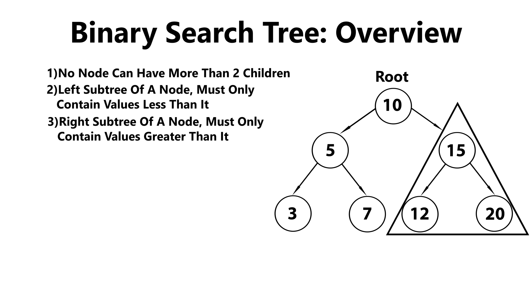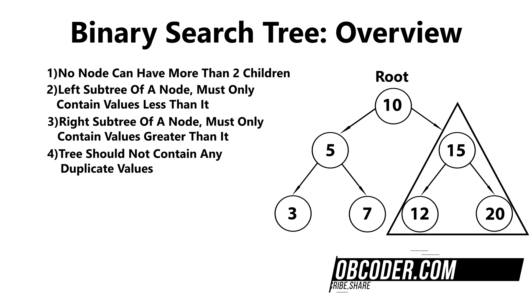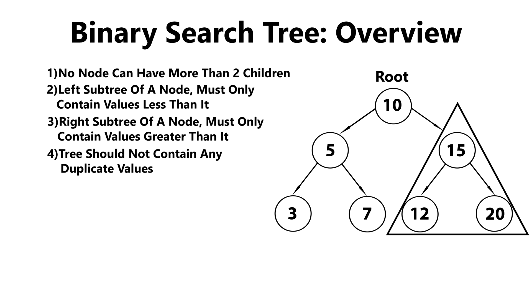The final property of a binary search tree is that it should not contain any duplicate values. If we take a look at our tree, you can see that it is a binary search tree. There are no duplicate values within our tree, and no node has more than two child nodes. If we look at our root node, you can see that the left child is less than it, and the right child is greater than it.